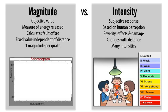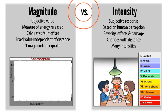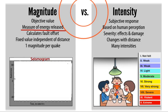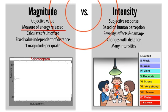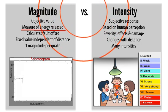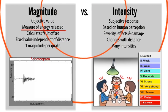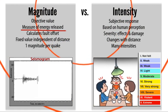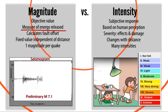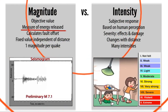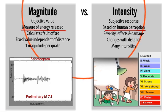Magnitude and intensity are both related to the size of an earthquake, but they each measure different aspects. Magnitude, which measures the energy released at the source of the earthquake rupture and is calculated using measurements from seismic instruments, is one single value. Seismic intensity,